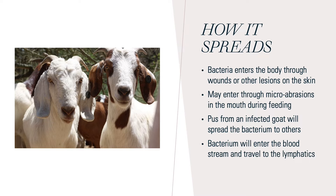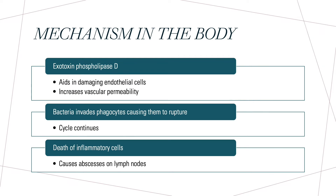A healthy goat coming in contact with the pus from another infected goat can also spread the bacterium through any present superficial cuts on that goat's skin, since it has access to the bloodstream in this way. And once the bacterium has entered the bloodstream, it travels to the lymphatics.